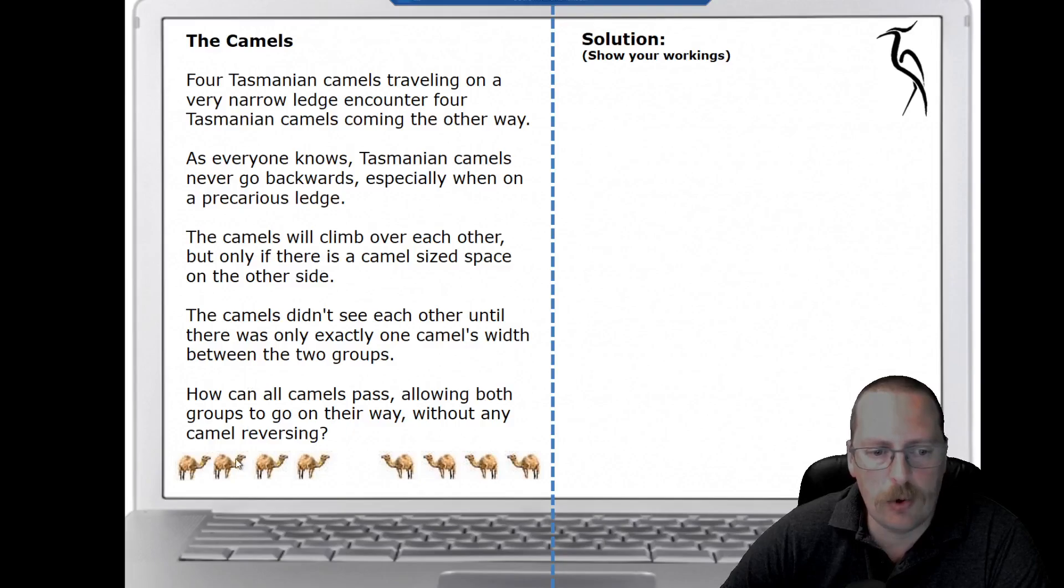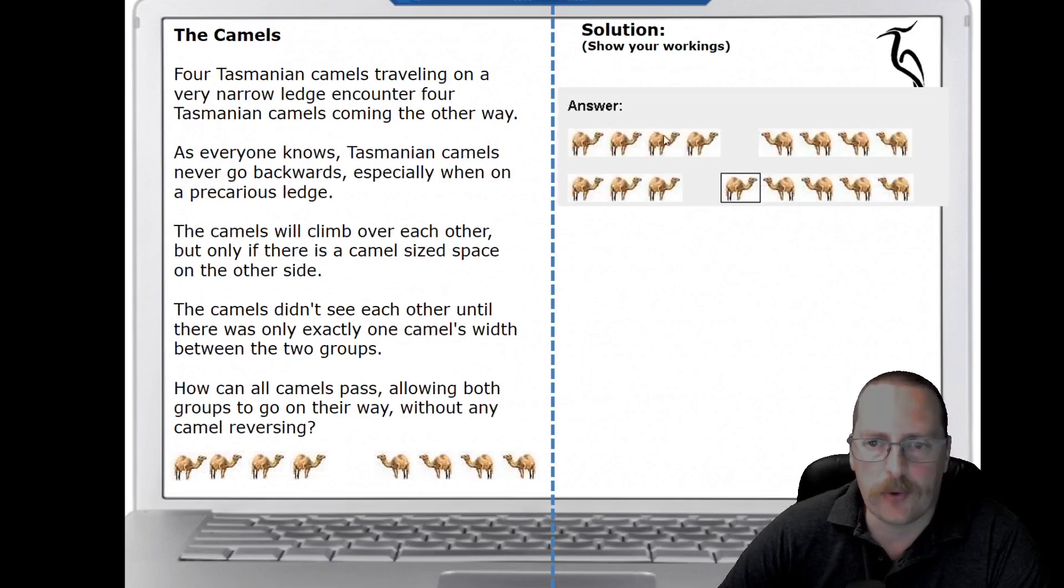The camels can climb over each other, but only if there is space for a camel to move into after it's climbed over another camel. We've got four camels all together, then there's a space, and then there's four more camels. I'm going to show you a partial solution. Four camels, a space, then four camels. The first stage is one of the camels to move forward. The next stage would be for this camel to climb over this camel and fill this space here. You've got to work out how to get the camels from one side past each other so they can carry on their journey.